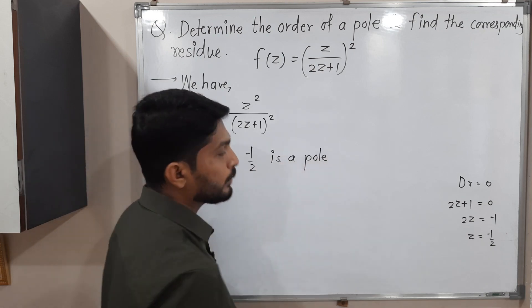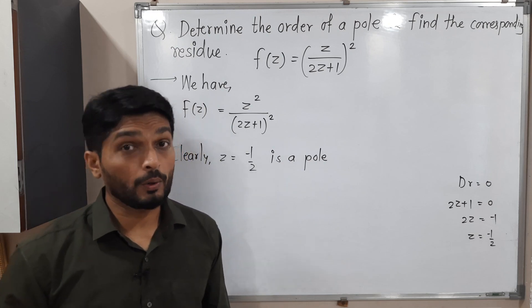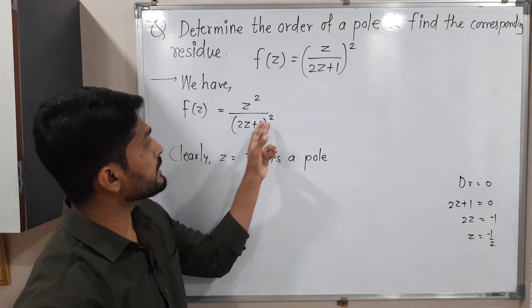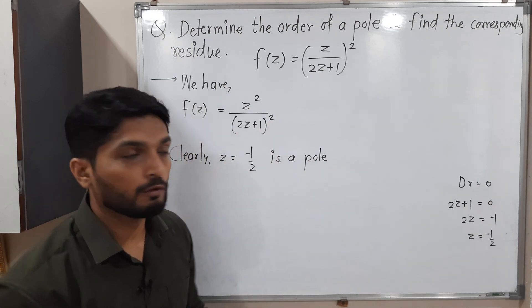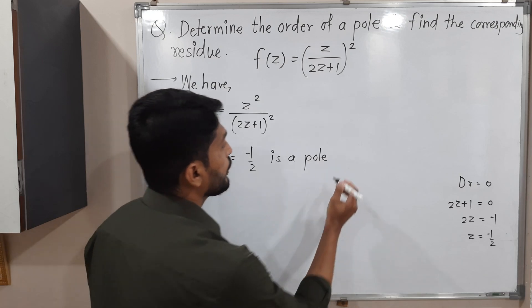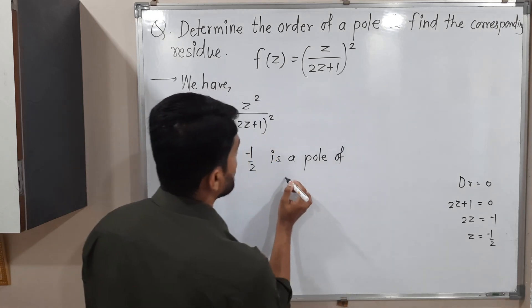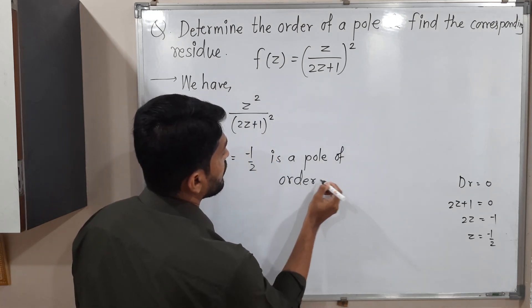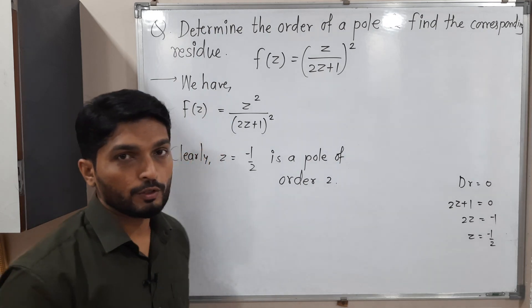So now the next question is: what is its order? The power of the bracket is 2, so it's a pole of order 2. So I got it's a pole of order 2.